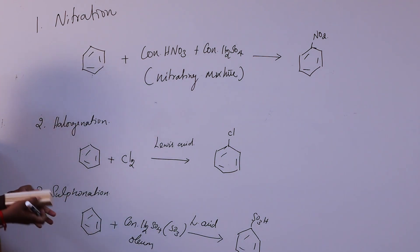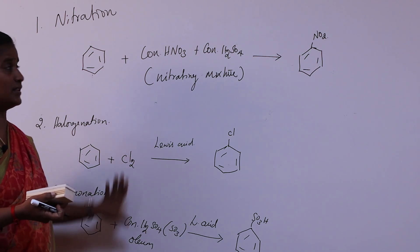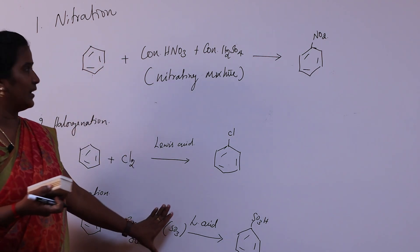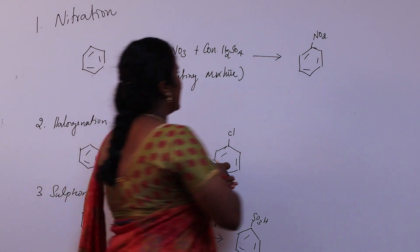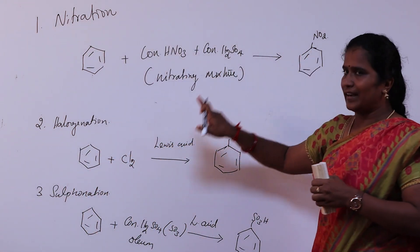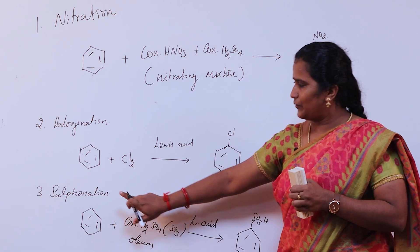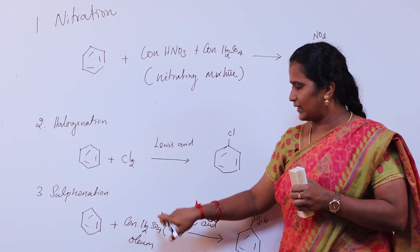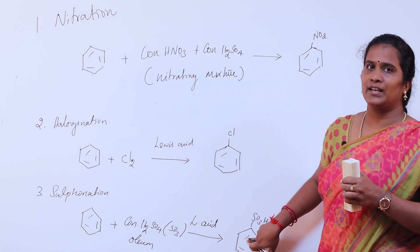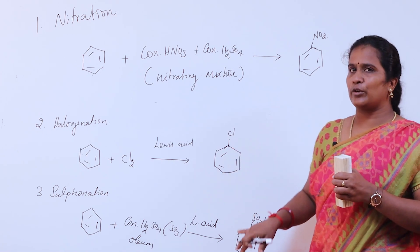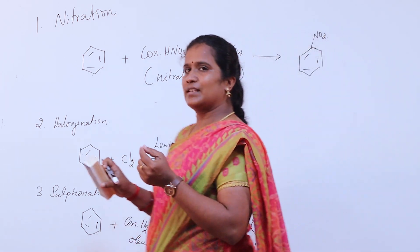In summary, the three main reactions are: nitration, which uses a nitrating mixture; halogenation, which uses halogens; and sulfonation, which uses sulfuric acid to give the sulfonation product. Next, I will explain the general mechanism using nitration as an example.